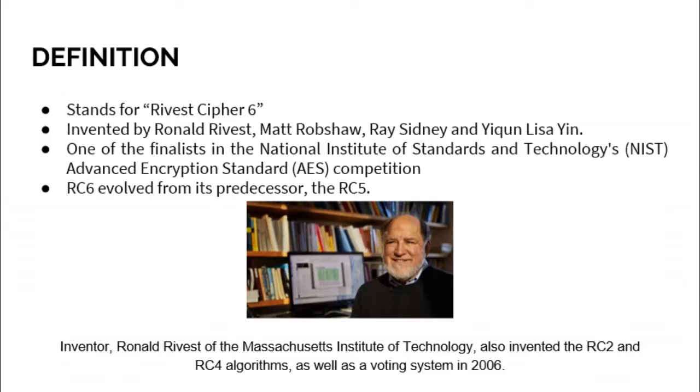For definition, RC6 stands for Rivest Cipher 6 and it was invented by Ronald Rivest, Matt Robshaw, Ray Sidney, and Yiqun Lisa Yin. RC6 was actually one of the finalists in the National Institute of Standards and Technology's NIST AES competition, and RC6 actually evolved from its predecessor RC5. Ronald Rivest also invented the RC2 and RC4 algorithms as well as a voting system in 2006, as you can see his picture in the image.